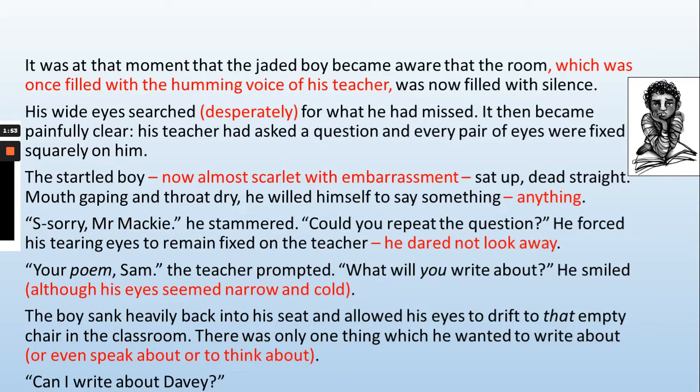He forced his tearing eyes to remain fixed on the teacher. He dared not look away. Your poem, Sam? The teacher prompted. What will you write about? He smiled, although his eyes seemed narrow and cold. The boy sank heavily back into his seat and he allowed his eyes to drift to that empty chair in the classroom. There was only one thing which he wanted to write about, or even speak about or think about. Can I write about Davey?